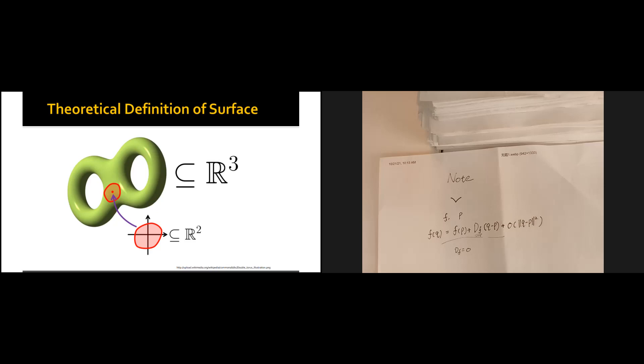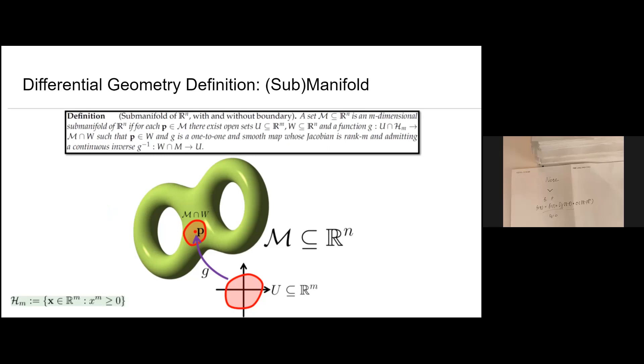The major difference between the parametric definition and the differential geometry definition is that in the parametric definition we use one global function to describe the whole surface, but in the differential geometry definition we consider things locally — for each point on the surface, we only describe its local neighborhood using a parameterized function.